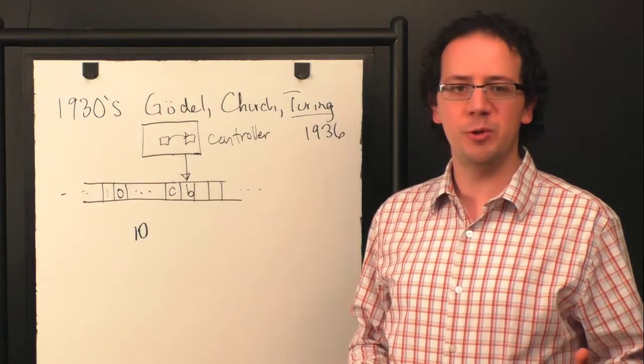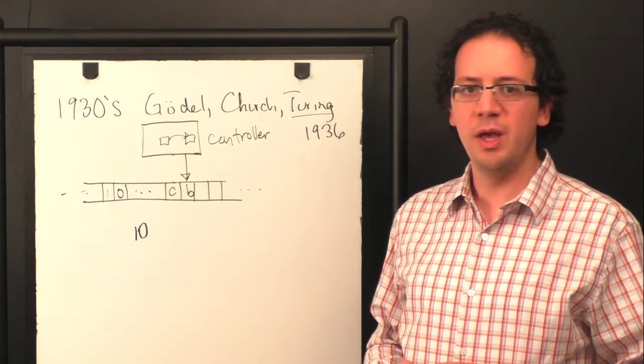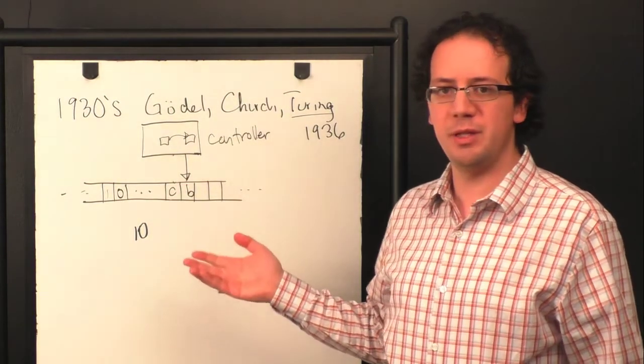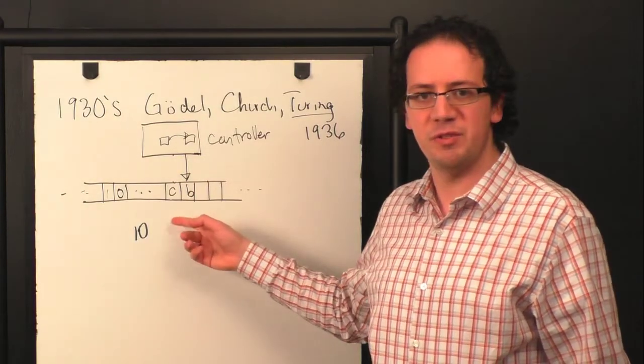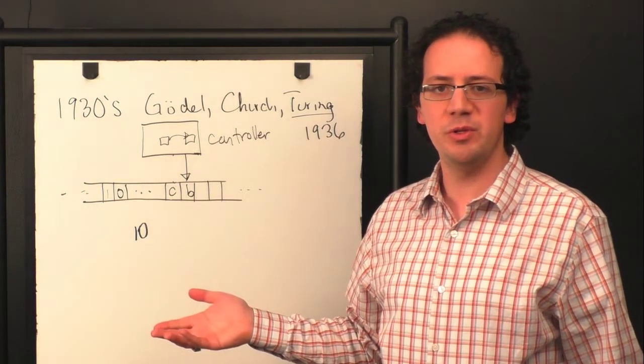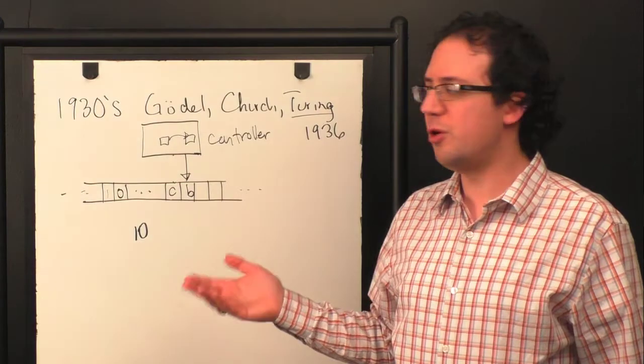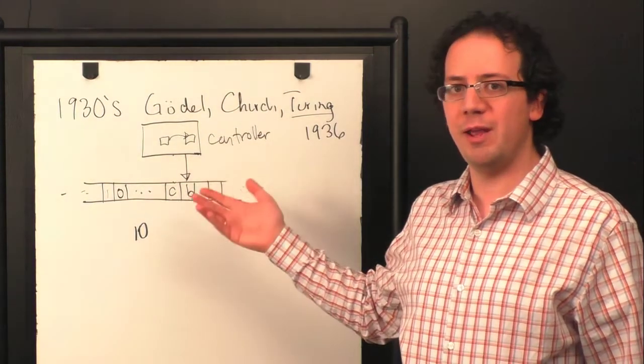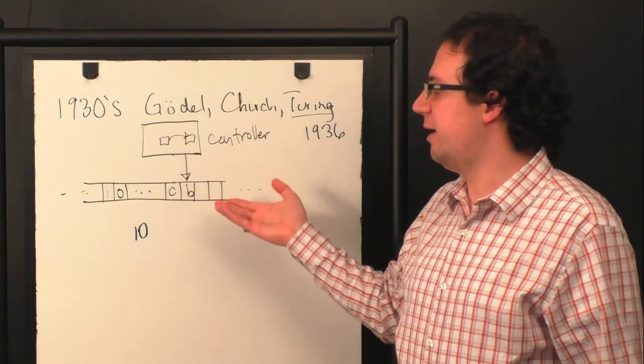Even the proposals for quantum computers that we actually want to build, when you talk about computing a function that takes in a finite list of symbols and spits out a finite list of symbols, even those are no more powerful in terms of what they are able to compute than Turing machines.